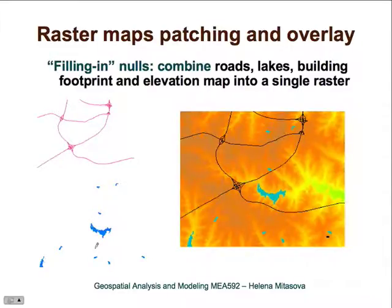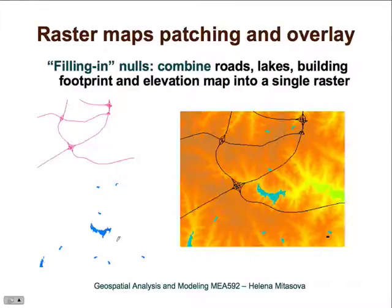Here is another type of patching. For example, if we want to drape a digital elevation model with lakes displayed in blue color in ENVI, we need to patch the DEM with the lakes raster into a single map. In this example, we start with roads, patch roads with lakes, and then fill everything still null with elevation. These three maps are merged into a single raster map that can then be draped on the digital elevation model within a visualization tool.